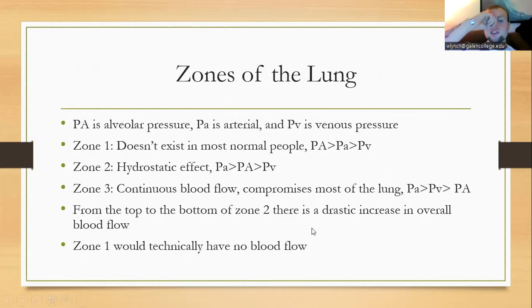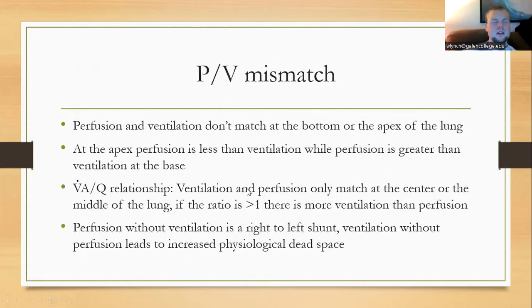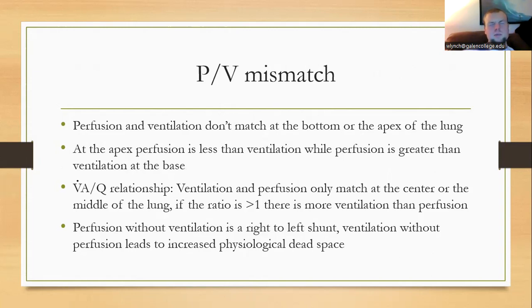From top to bottom of zone 2, there is a drastic increase in overall blood flow. A V/Q mismatch — ventilation-perfusion mismatch — is simply where they don't match up: more perfusion than ventilation, or more ventilation than perfusion. At the apex of the lung, there is less blood flow than ventilation — more air coming in than blood to match. Moving down the lung, we become more perfused and ventilation decreases toward the bottom. Ventilation-perfusion only matches at the center of the lung. If the V/Q ratio is greater than one, there is more ventilation than perfusion.